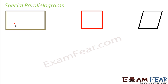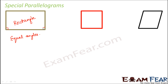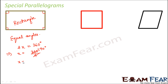The first one we would discuss is a rectangle. So how is a rectangle a special parallelogram? It is such a parallelogram where all the angles are equal. Normally in a parallelogram only opposite angles are equal, but in a rectangle all four angles are equal. Since all angles are equal, each angle must be 90 degrees, because 4x = 360, giving x = 90 degrees.